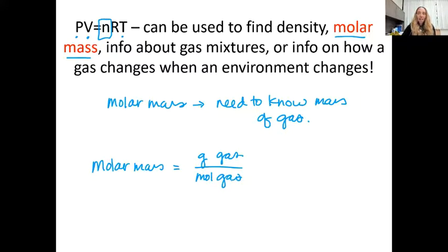And so you can find this using PV equals nRT by solving for n. So n equals PV over RT. So you use the ideal gas law to find the moles of gas, and then the problem gives you grams of gas, which gives you molar mass. Just pay attention to those units and labels when you're doing these problems.